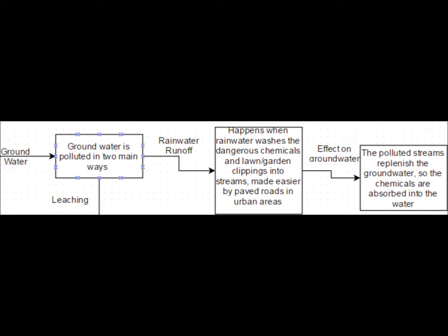To begin, groundwater can be polluted in two main ways: leaching and rainwater runoff. Rainwater runoff is when rainwater washes the dangerous chemicals and lawn or garden clippings into nearby streams or other waterways. This is made easier by paved roads and urban areas. Then the polluted streams replenish the groundwater, absorbing the chemicals into the vital water source.